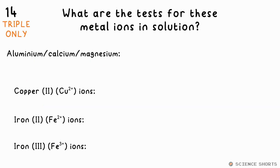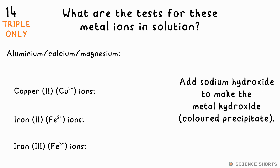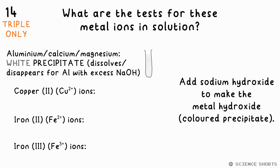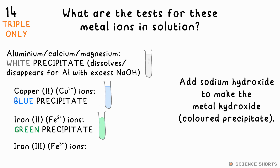How do you test for metal ions in solution? You add sodium hydroxide, which makes a metal hydroxide — that's a coloured precipitate. Aluminium, calcium, and magnesium all make white precipitates. Copper ions cause a blue precipitate to form. Iron(II) ions result in a green precipitate, while iron(III) ions make a brown precipitate.